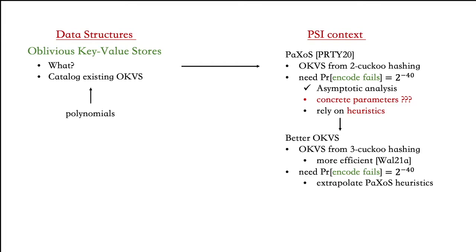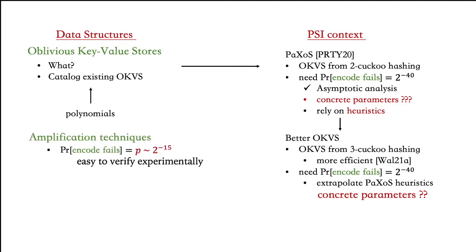Our goal is to build a more efficient OKVS with cuckoo hashing using three hash functions, which is known to be much more efficient. Again, we are not equipped to determine the tight concrete bounds for negligible failure probability. Our first construction is to extrapolate the parameters of Paxos and design a binary OKVS using three hash functions. However, we would still like empirical confidence for our chosen parameters, but empirically verifying negligible failure probabilities like 2⁻⁴⁰ is infeasible.